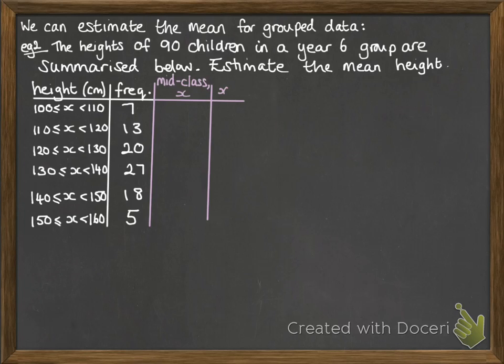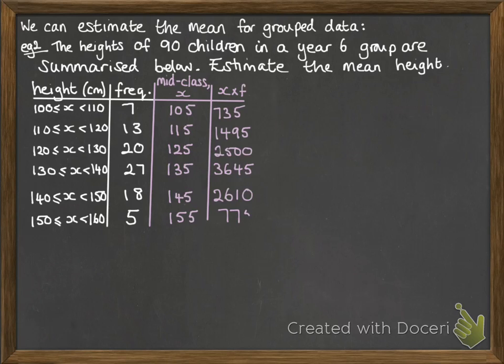We just add a little bit extra onto that table and write down what that mid-class value is on each one. Then we're going to do the frequency times that value - we're estimating that everybody is that value in the middle of that group. So we get these numbers by multiplying across.